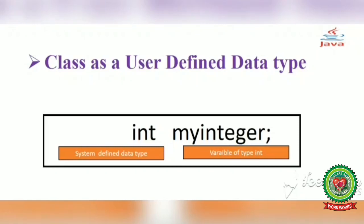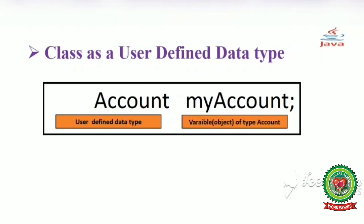For example: int my_integer — here int is a system defined, built-in data type, and my_integer is a variable of type int. We can write any variable name in place of my_integer. Now see the next example: account my_account — here account is a user defined data type, meaning we have created a class named account, and my_account is a variable, which is the object of type account. So account is the class and my_account is the object of type account.